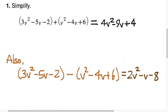I like the vertical method because it works just as well for subtraction as it does for addition. So in the vertical method you lined up 3v squared minus 5v minus 2, and underneath it you lined up v squared minus 4v plus 6.